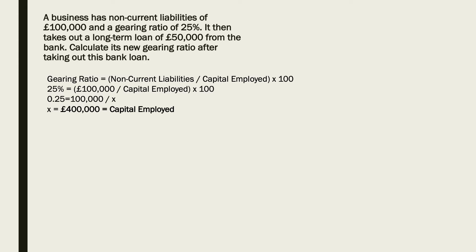We need to rearrange the formula here. We put the gearing ratio in at 25%, and we've got the non-current liabilities of £100,000, but we don't know the capital employed — it wasn't given in the question. So if we make 25% into 0.25, that equals 100,000 divided by X, where X is capital employed. So capital employed must equal £400,000.